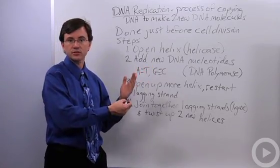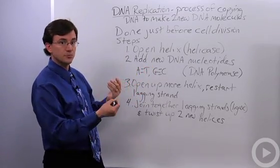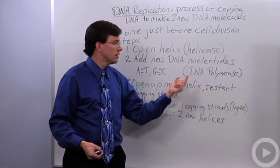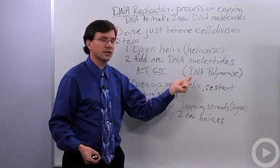Wherever there's an A, you put a T. Wherever there's a T, you put an A. Wherever there's a G, you put a C. Wherever there's a C, you put a G. And that's done by the enzyme DNA polymerase because we're making a polymer of DNA using the enzyme.